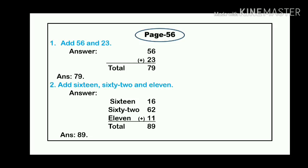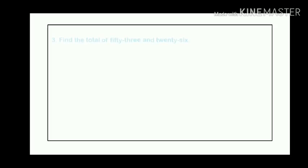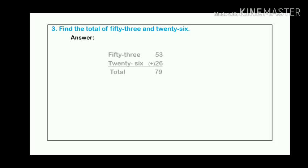Next, our word problem is 3: Find the total of 53 and 26. First, we will write 53 with 53 numerals. And next line, we will write 26 with 26 numerals. So we will count after 6 up to 3: 7, 8, 9. And on the other hand, we will count after 5 up to 2: 6, 7. Our total is 79 and our answer is 79.